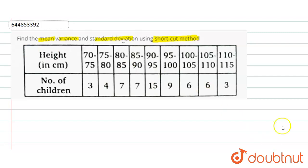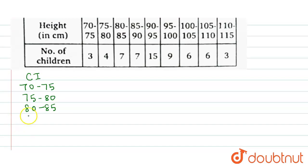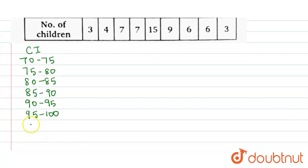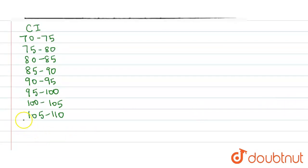First of all, let me draw the observation table. The first column is of class intervals starting with 70–75, 75–80, 80–85, 85–90, 90–95, 95–100, 100–105, 105–110, 110–115.